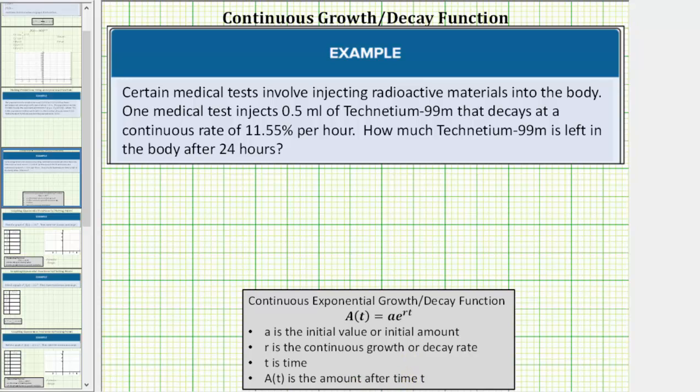For the first step, we need to set up the exponential function. Let's begin by stating all the given information. Because 0.5 milliliters of technetium-99m is injected, the initial amount, a, equals 0.5 milliliters.